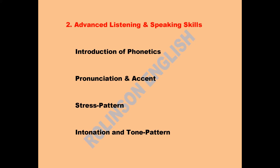Do you know how many sounds are there in English? These units of sounds are called phonemes and they are divided into two parts: consonants and vowels. All together in English we have 44 sounds. Out of these 44 sounds, 24 are consonants and the rest 20 are vowels. But in the 20 there are two groups: first 12 are the vowels and the rest 8 are the diphthongs — two vowel symbols joined together to make one unit. So this way, 12 plus 8 plus 24, we have 44 sounds in English.